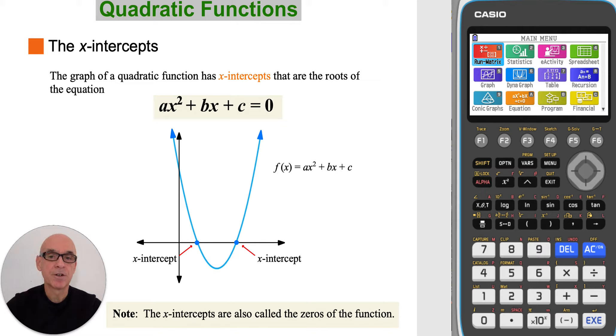The function has x-intercepts that are the roots of the equation ax squared plus bx plus c is equal to zero.